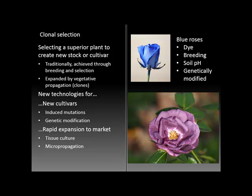The first way is just by dyeing a pink or white rose with a blue dye. That's quick and easy, but it does not persist in the next generation. Secondly, there's been some work that has gone into breeding roses for their blue color. A third method is manipulating the soil pH to promote the development of pigments that make roses look blue.